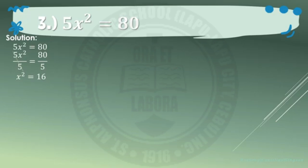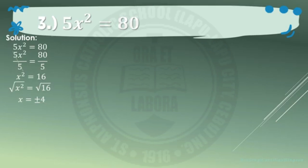Next, apply the square root property by extracting square roots on both sides of the equation: square root of x squared equals square root of 16. Remember to consider the positive and negative roots. So the value of x is positive or negative 4. That is, x equals 4 and x equals negative 4.